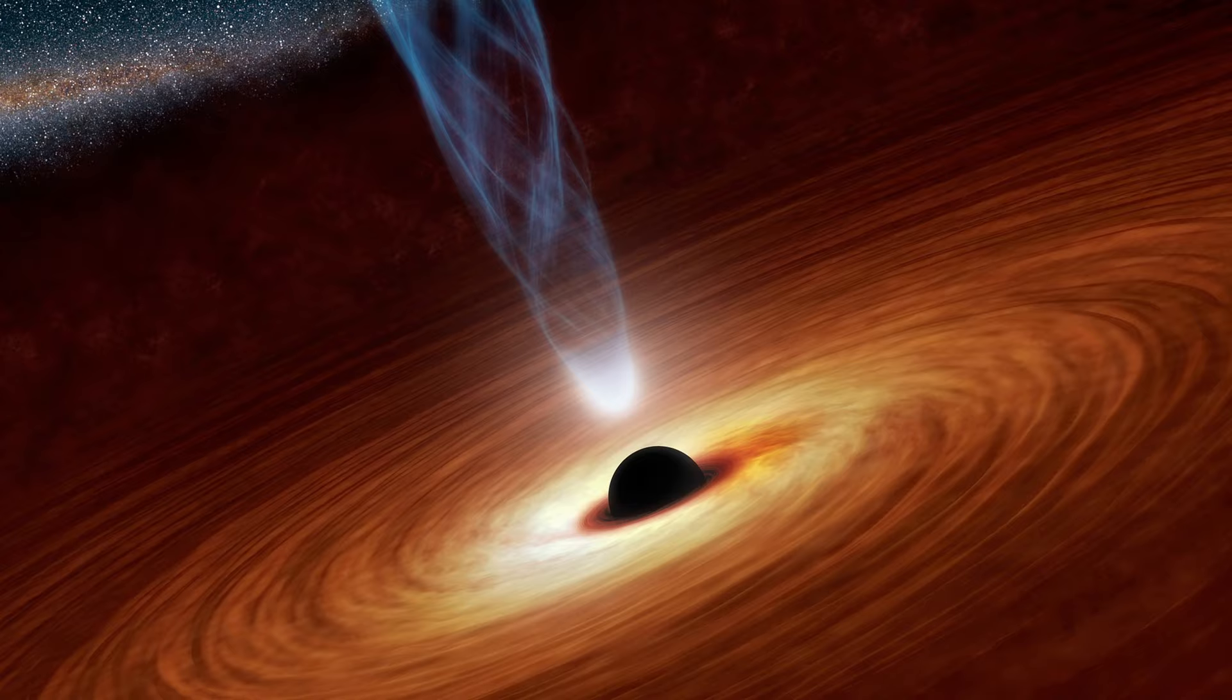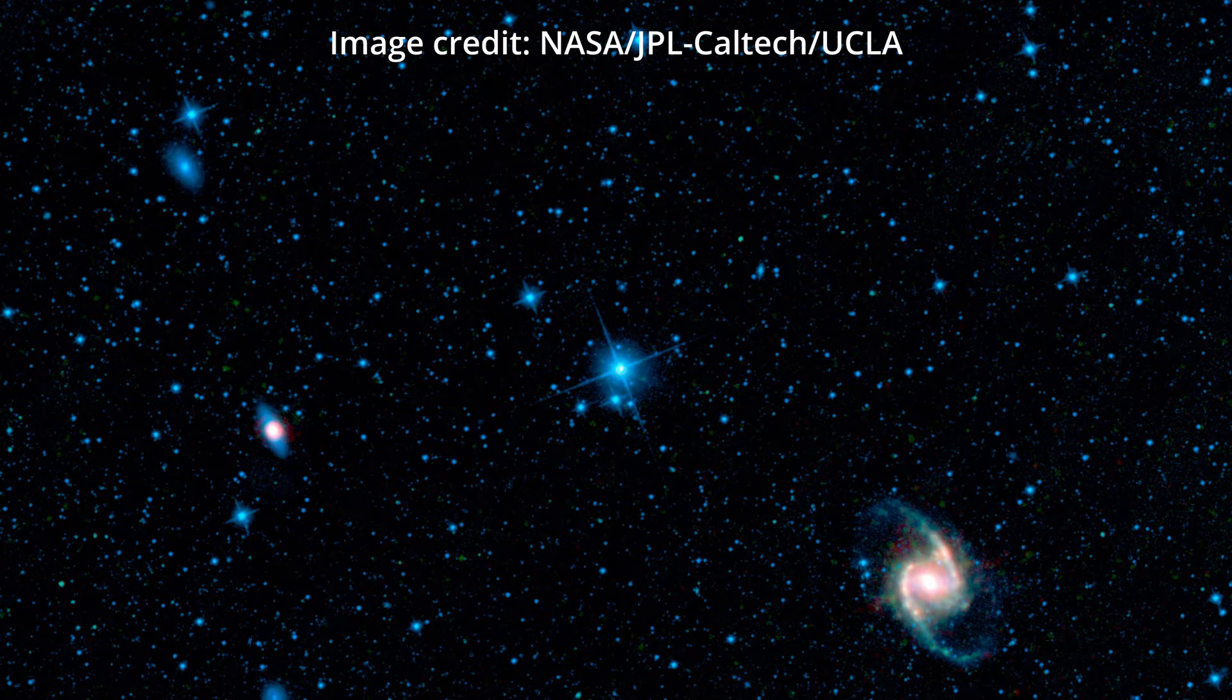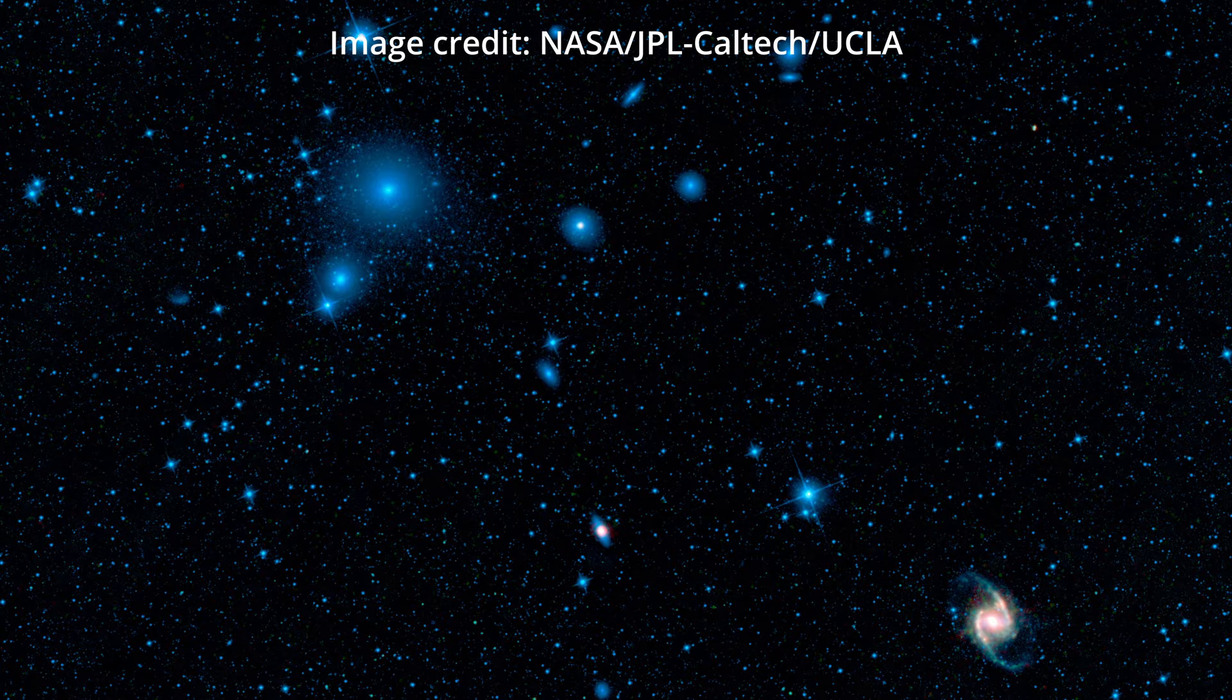That gas is ejected in such a huge amount that it turns the center of this galaxy so bright. The Great Barred Spiral Galaxy in Fornax constellation is one of the largest galaxies we know.